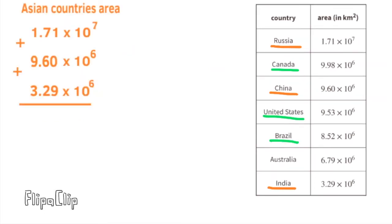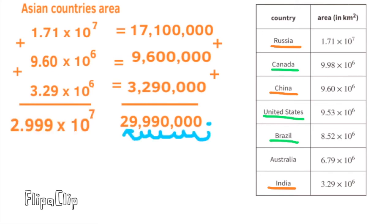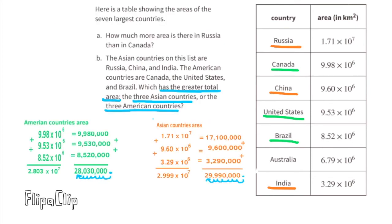Now the three Asian countries: 17,100,000 + 9,600,000 + 3,290,000 equals 29,990,000 square kilometers, written as 2.9999 × 10⁷. You can easily see that the total area of the three Asian countries is greater than the total area of the three American countries.